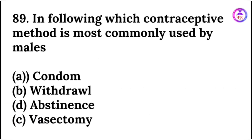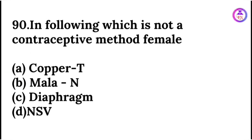Which contraceptive method is most commonly used by males? The answer is condoms. Which is not a contraceptive method for females? The answer is NSV — non-scalpel vasectomy.